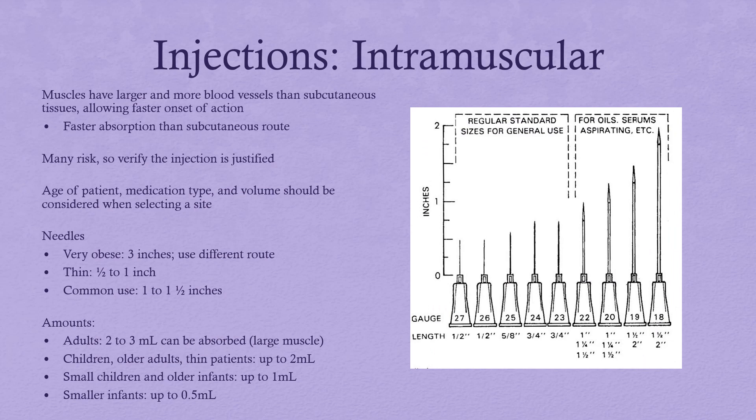Intramuscular injections deliver medications through the skin and subcutaneous tissue into the muscle. This has a faster absorption rate than subcutaneous, but it comes with more risks. Stop and think: does the patient really need this medication in the muscle, or is there a different route that would work better? Vaccines are about the only thing still given in the muscle anymore. Some antibiotics are still given, but we try to avoid this method because it is so painful for the patient after the injection.